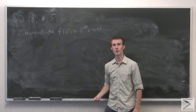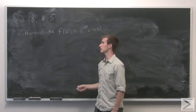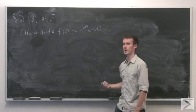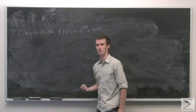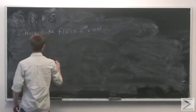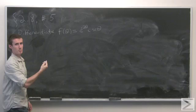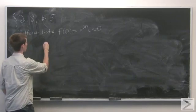Problem number five of section 2.8 is to differentiate a function involving exponential and the cosecant function. Since this is a product of two functions, we'll use the product rule.